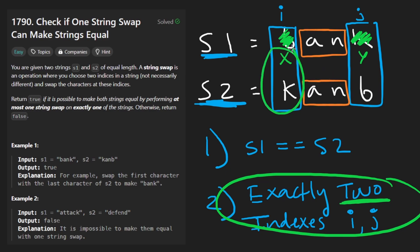But if we swap them they are not gonna be equal. x is not equal to b and y is not equal to k. So it's not enough to identify the two positions. We also have to kind of cross match them and make sure that they are equal.